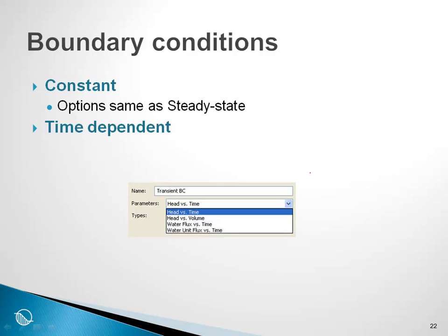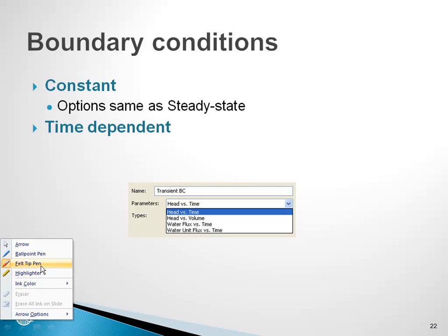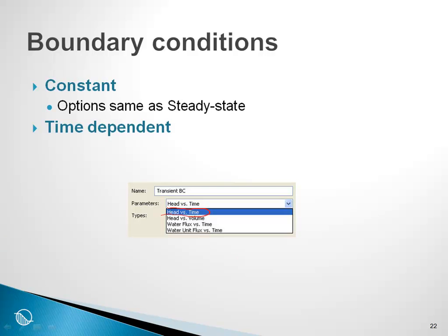Just a few comments about transient boundary conditions. As we have noted several times, in a steady-state analysis our boundary conditions are constant. In a transient analysis, our boundary conditions can be a function. For example, we might make head a function of time or we have a certain infiltration rate versus time. We will demonstrate how to use a boundary function in the example that we are going to go through here in just a few moments.